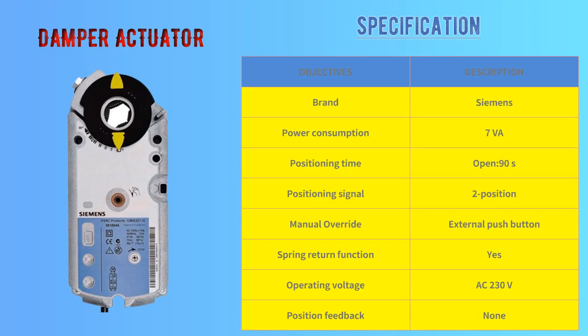Fourth, this is also a damper actuator from Siemens, but there is a minor difference. As you can see, it is written 2-point, meaning only 230 volt AC power is applied to it. That means this damper actuator is used as a fire damper actuator. The major point is it has a spring return function, meaning when any emergency happens, it will close the damper immediately.